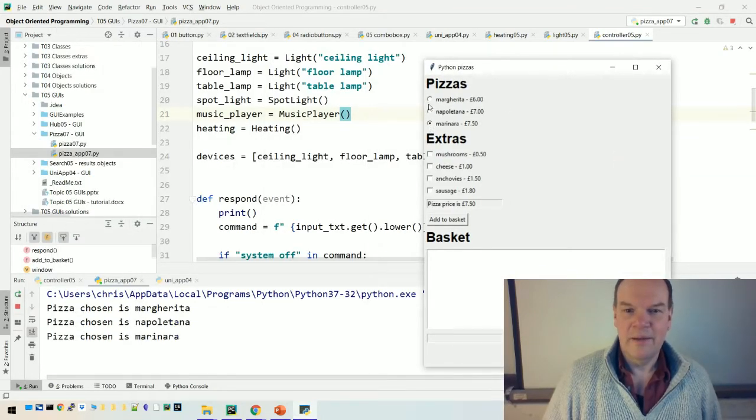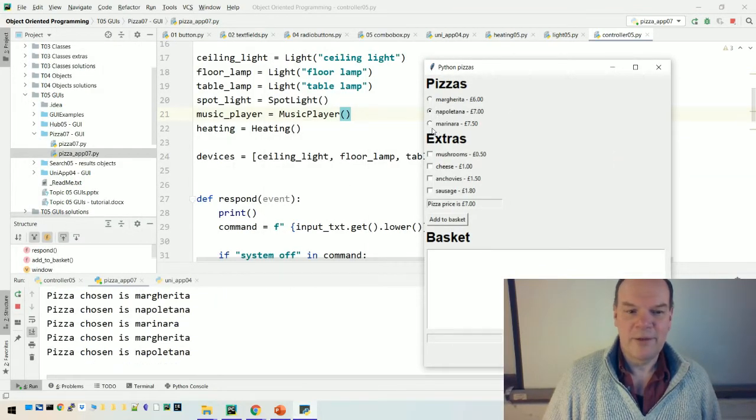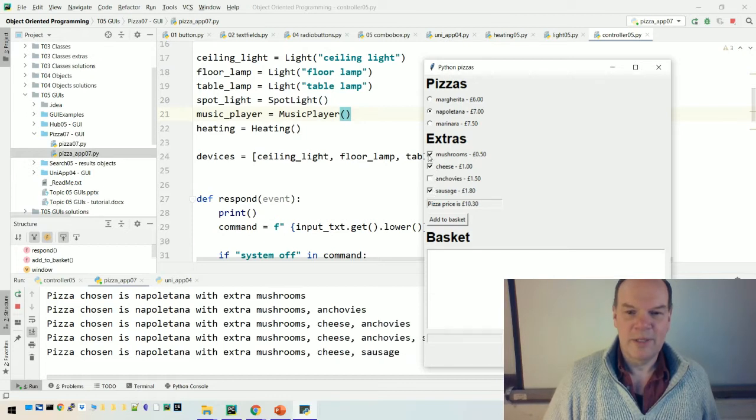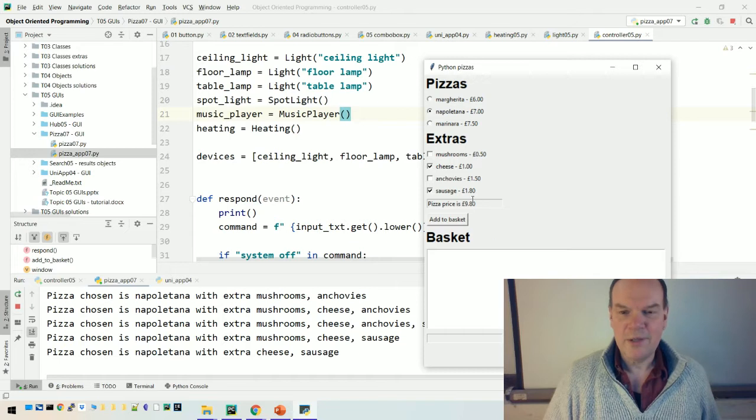The user can check what type of pizza it is and you'll notice the output here. This is just information going to the console, what type of pizza is selected, and then which extras based on what the user selected in the checkboxes. When the user's decided what they want, they click add to basket.